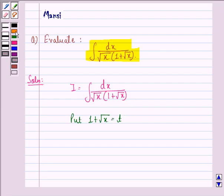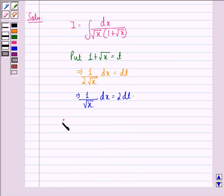We differentiate both sides and we get 1 upon 2 square root x dx is equal to dt. On cross multiplication we get 1 upon square root x into dx is equal to 2 dt.